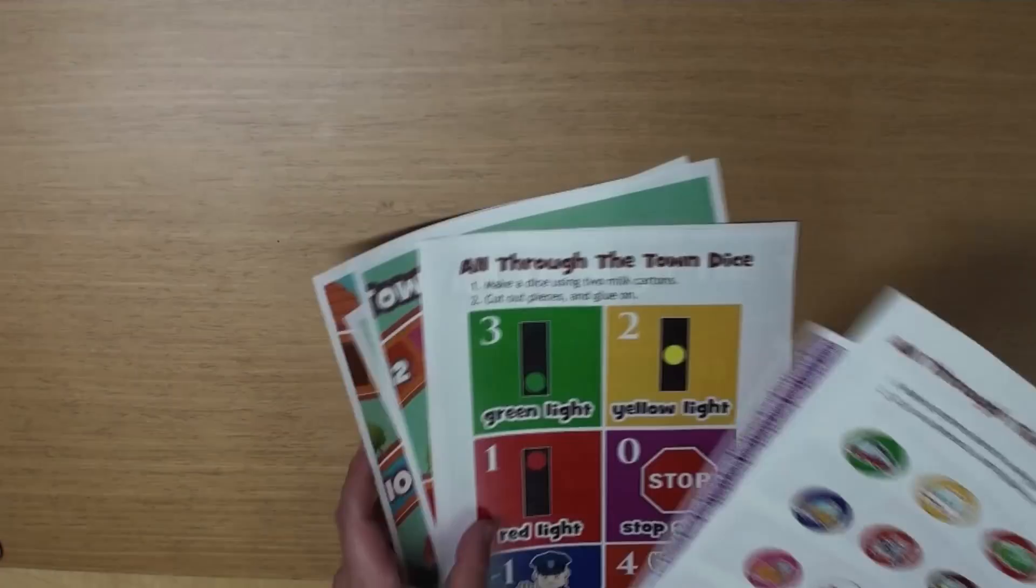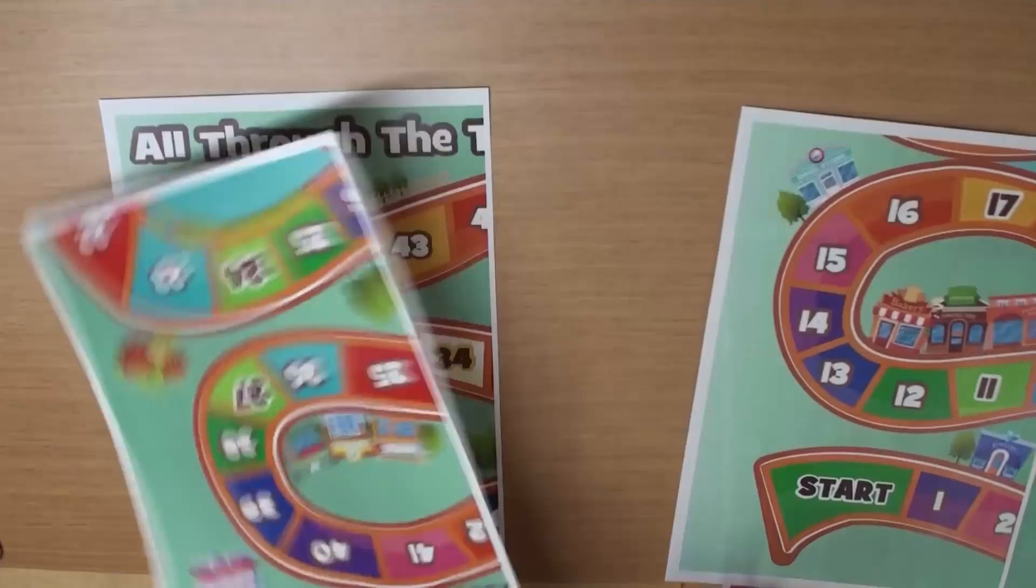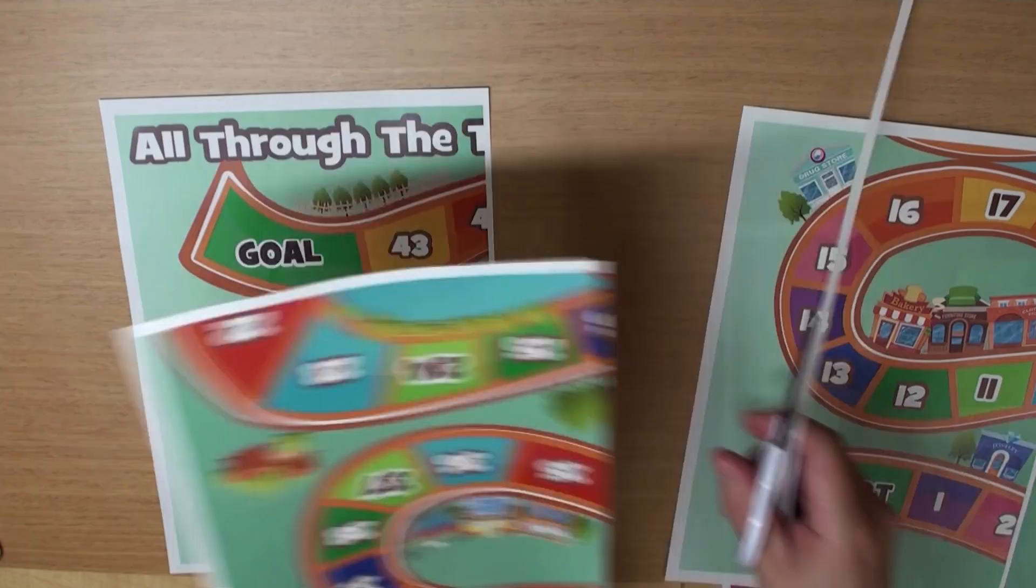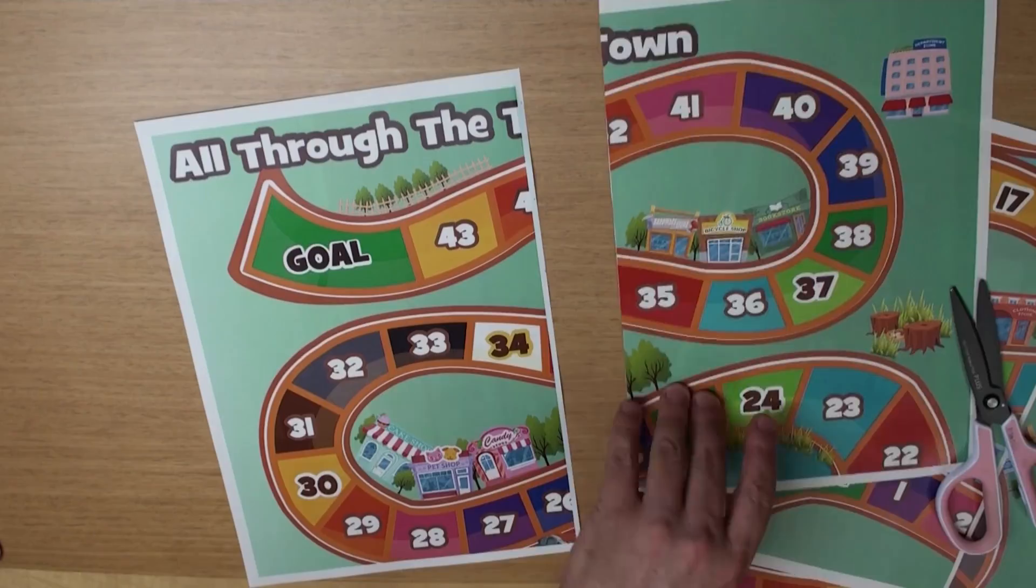First, you need to print out all of these papers. Yeah! And let's make the game board first. Just cut off the little bit of white on one of them, like this. And glue it together like this.